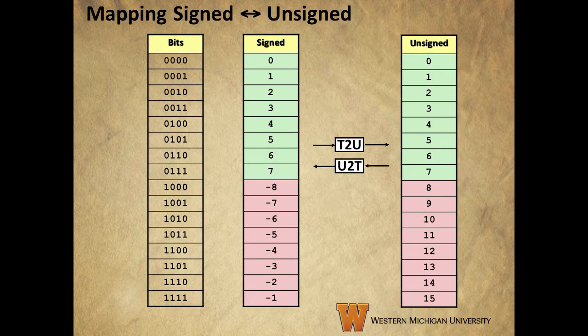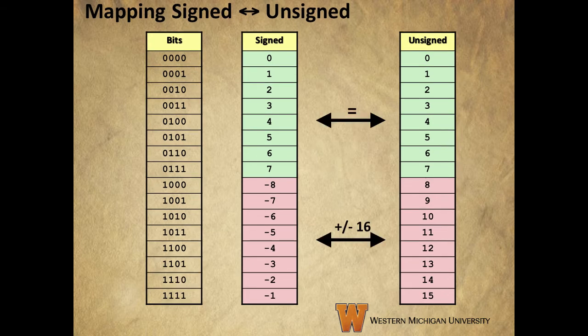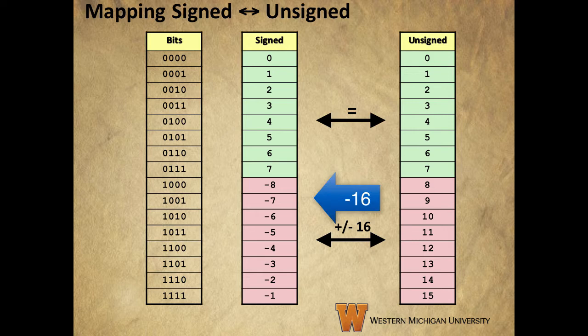This diagram shows the values of signed and unsigned integers associated with nibbles ranging from 0000 to 1111. For all values that have a most significant bit of zero, shown in green, the unsigned and two's complement values are identical. Once the most significant bit — the sign bit — is one, the values change. The plus or minus 16 indicates the difference between the values when interpreted as one or the other. We can add 16 to go from signed to unsigned, or subtract 16 to go from unsigned to signed. We use 16 here because nibbles have a total of 16 unique bit patterns.